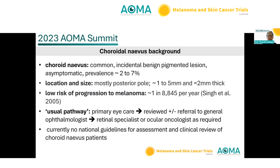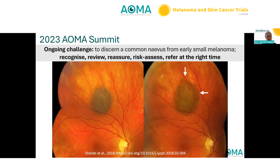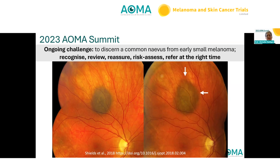There are no national guidelines currently in Australia for optometrists for assessing and clinically reviewing choroidal nevus patients. The ongoing challenge is to discern a small nevus from a small melanoma. We don't want to delay — the sooner we diagnose early small melanomas, the better the outcome. The mission is to recognise, review, reassure the patient and the practitioner, but also to risk-assess and refer at the right time.